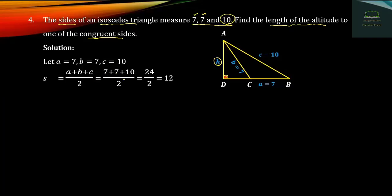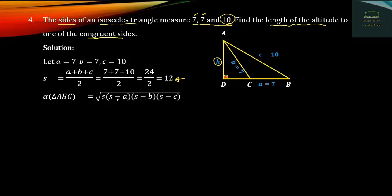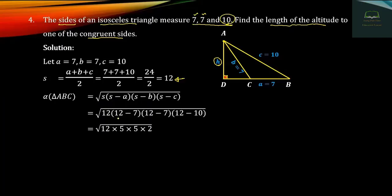Computing S: 7 plus 7 plus 8 plus 24 divided by 2 equals 24. The area of triangle ABC equals square root of S times (S minus A) times (S minus B) times (S minus C), where S equals 2, A equals 7, B equals 7, C equals 3. This gives a total area of 4 by 4 square units.